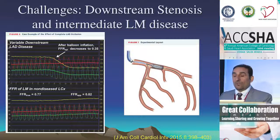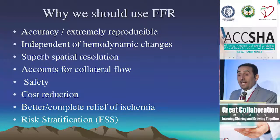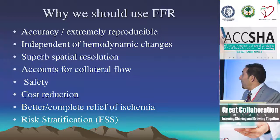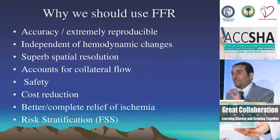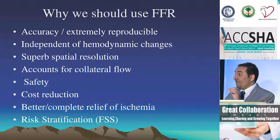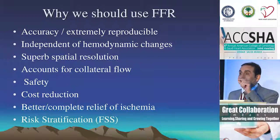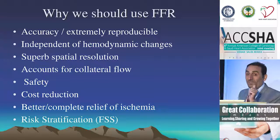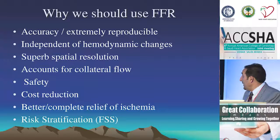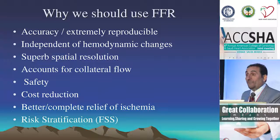Why should we use FFR? It's quite accurate and extremely reproducible. It's independent of hemodynamics — you can give nitroprusside, milrinone, or dopamine and it does not change. It has superb spatial resolution, allowing you to specify which lesion to fix in multi-vessel disease. It accounts for collateral flow — a moderate lesion supplying collaterals to other vessels will show a significant FFR because it's feeding two territories. Cost reduction was seen with fewer stents, less contrast, and shorter procedure time. Better and complete relief of ischemia was seen post-PCI and post-CABG, and it enables risk stratification via the functional syntax score.